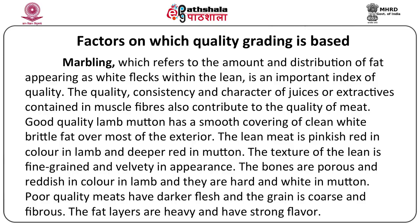Good quality lamb and mutton have a smooth covering of clean, white, brittle fat over most of the exterior surface. The lean meat is pinkish red in colour in lamb and deeper red in mutton. The texture of the lean meat is fine-grained and velvety in appearance. The bones are porous and reddish in lamb but hard and white in mutton. Poor quality meats have darker flesh with a coarse and fibrous grain.